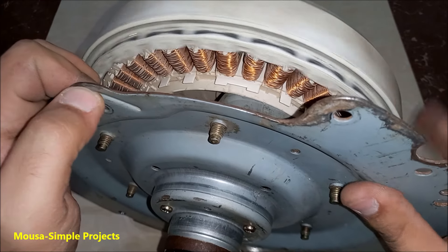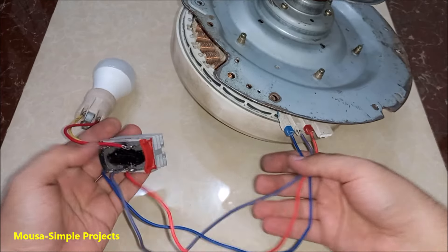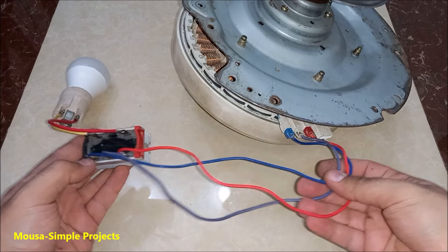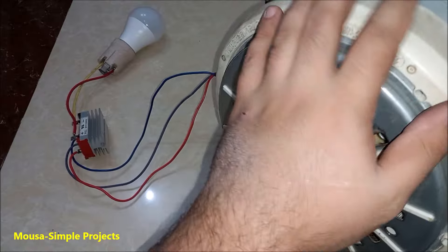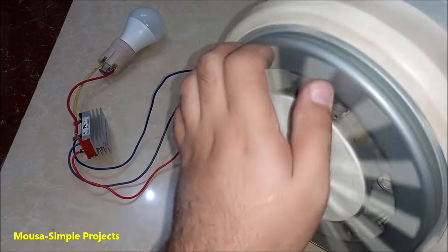I connect the three phases to a bridge rectifier so the output will be DC voltage, and this LED lamp as a load. As you can see, by spinning the shaft just by hand it can produce enough voltage to run the 220 volt lamp, which is excellent.